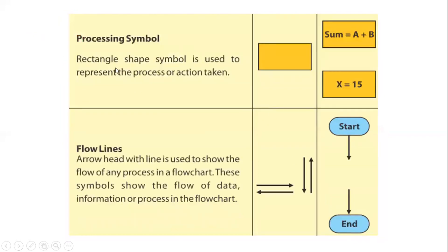Next we have the Processing symbol. A rectangle shape symbol is used to represent the process or action taken. Input holds the raw values from the problem statement, and output displays the final result. The processing symbol uses a rectangle shape where all calculations and operations are represented. For example, sum = a + b is a calculation represented in rectangle shape, and similarly x = 15 is also a process represented in rectangle shape.